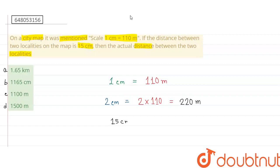और options क्या क्या हैं? Option A, 1.65 km. Option B, 1165 cm. Option C, 1100 m. And option D, 1500 m.